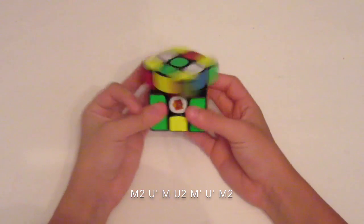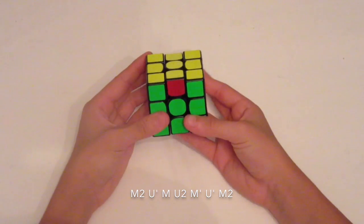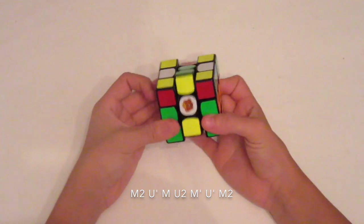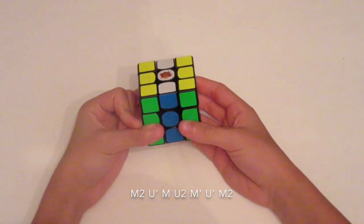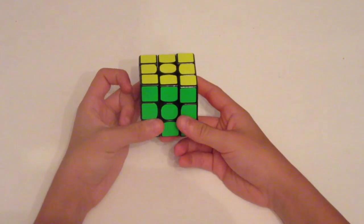So again, I'll just set it up here. So M2, U-prime, M, U2, M-prime, U-prime, M2. So that's the algorithm.